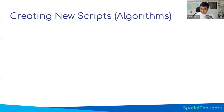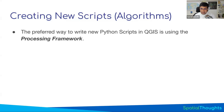Processing scripts are also known as algorithms. When you hear 'create a new processing algorithm', that is the same thing as creating a processing script. QGIS refers to all the tools as algorithms, and you can create a new algorithm using a script, which uses the processing API. QGIS has a processing framework which allows you to have a standardized way to take user inputs, configure parameters, and run your workflows.